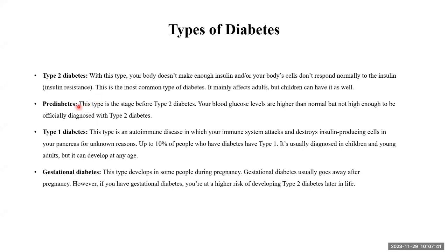Pre-diabetes is a condition just before actual diabetes starts — it is staged before Type 2 diabetes. Your blood glucose levels are higher than normal but not high enough to be officially diagnosed with Type 2 diabetes. We use different tests to assess diabetes status — fasting glucose, random glucose, or HbA1c levels — and pre-diabetes is a stage in which a person is about to become diabetic. These are clinical terms used in hospitals to categorize patients.